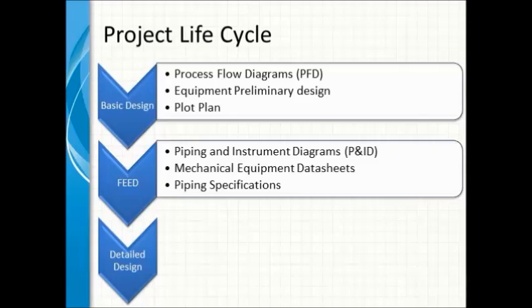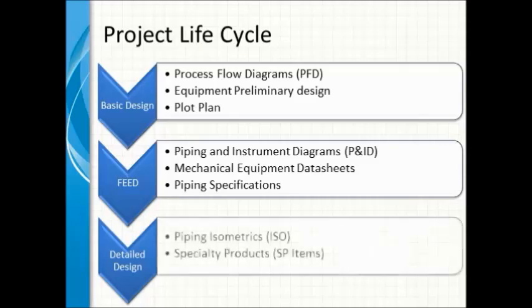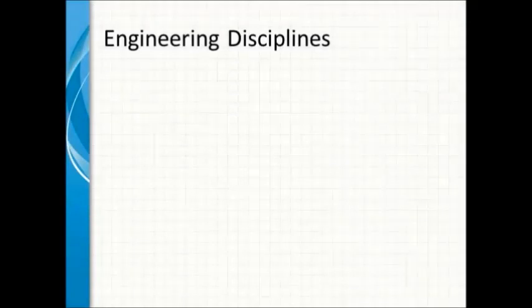Once FEED is completed, the project moves to phase four — detailed design. This is the final design phase, which will have all the details needed to go to construction. Piping will start to generate ISOs, showing every single component and all dimensions needed. Piping engineering will generate all the SP items, and the line list will have all the information inside. All deliverables will be completed at this phase and the project will be ready for construction.